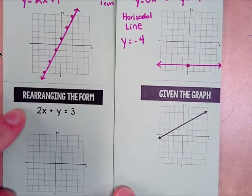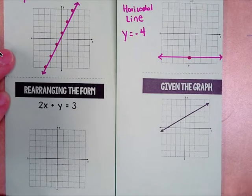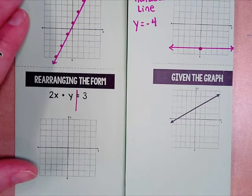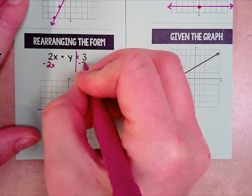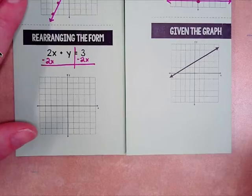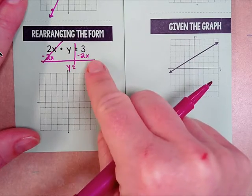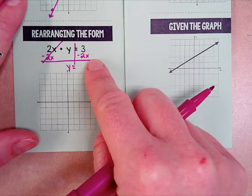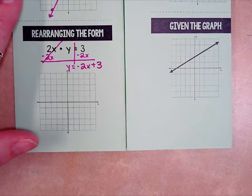Let's look at rearranging the form. We have 2x plus y equals 3 — to graph it we're going to rearrange it so it says y equals. Draw a line down the equal sign. To get rid of 2x, subtract 2x on both sides. That cancels, and we just have y equals — 3 and the negative 2x can't be combined because they're not like terms. Rewrite it in mx plus b form: negative 2x plus 3.